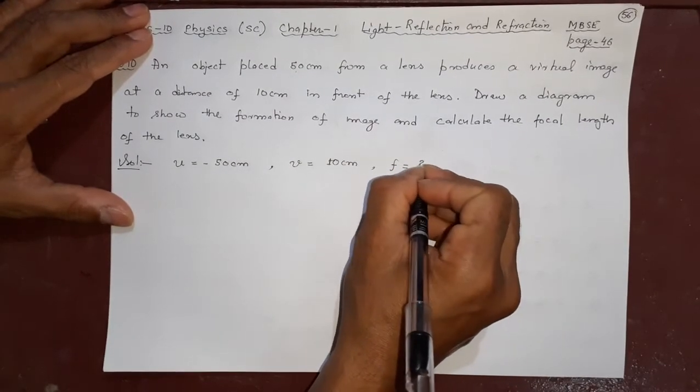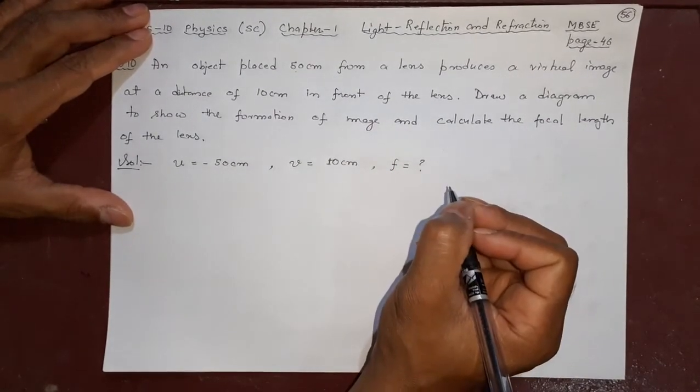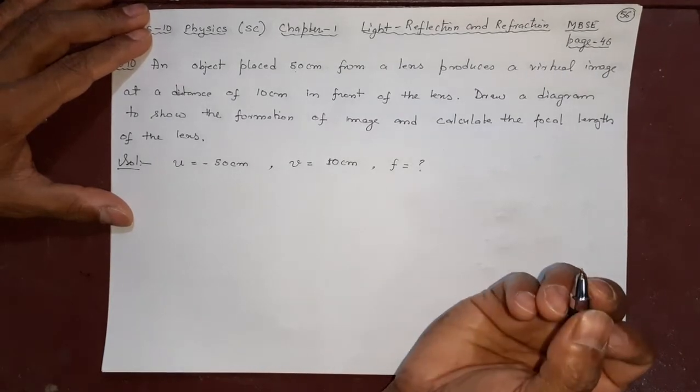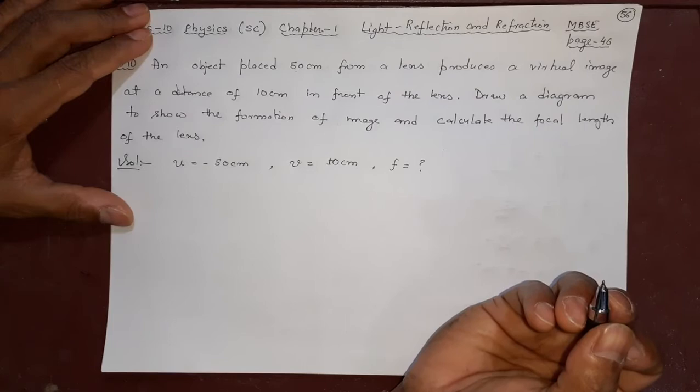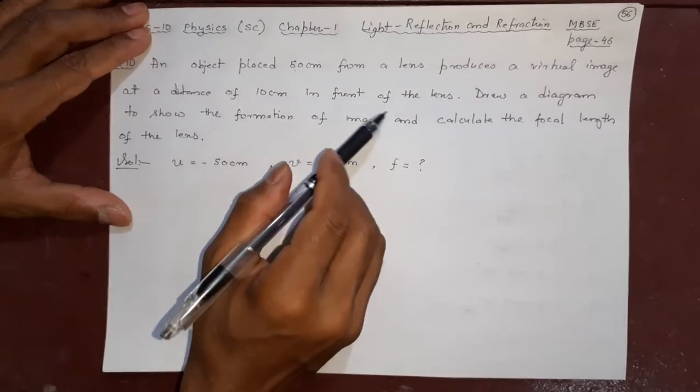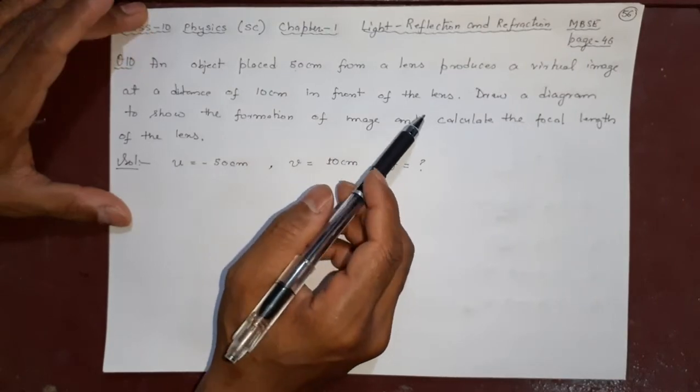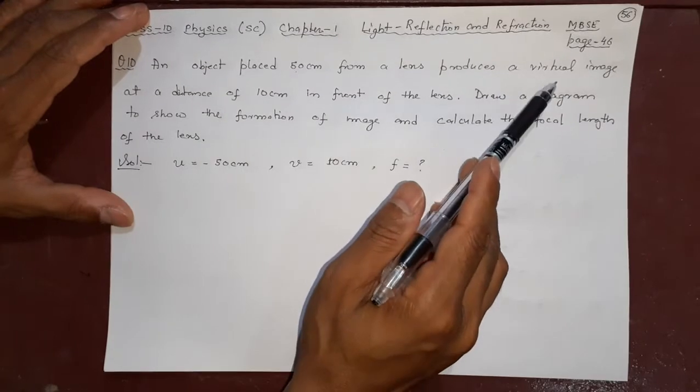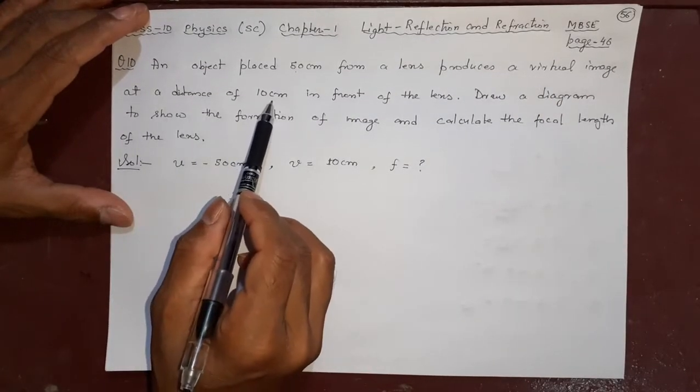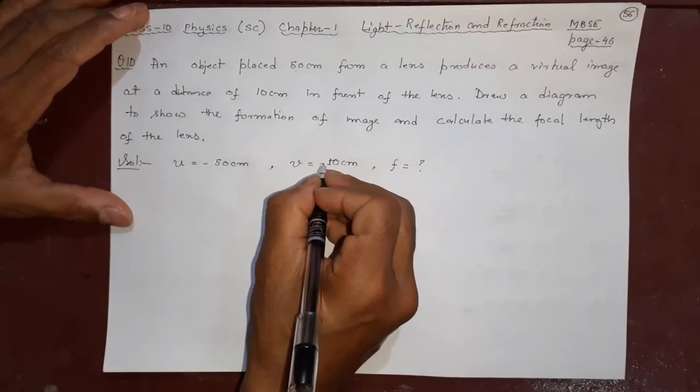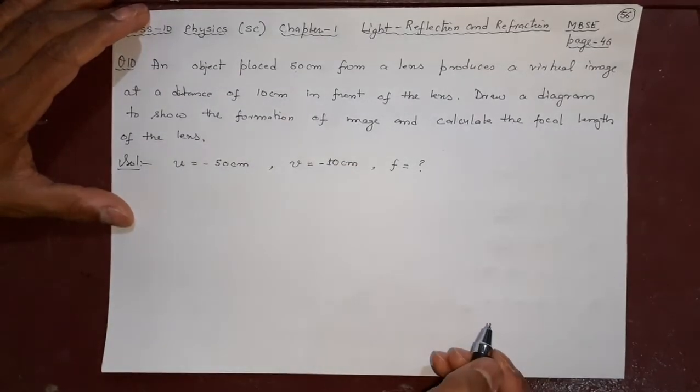F is equal to question mark, and you are going to calculate the focal length in this case. 10cm in front of the lens - remember the object is kept 50cm from the lens, produces a virtual image at a distance of 10cm in front of the lens, means this side. I will write here front equals left side, not behind.